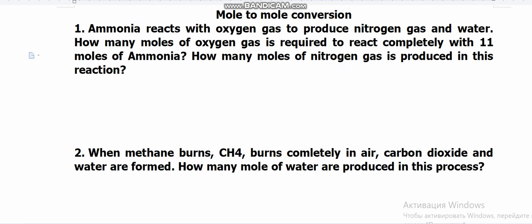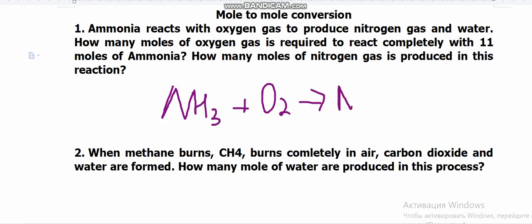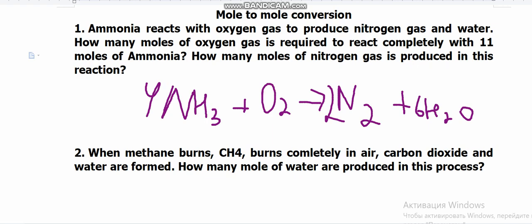Let's read the first question: ammonia reacts with oxygen gas to produce nitrogen gas and water. Ammonia is NH₃; it reacts with oxygen gas and produces N₂ and H₂O. First you have to balance the equation. For balancing, I will write here 4, 2, 6, and 3.